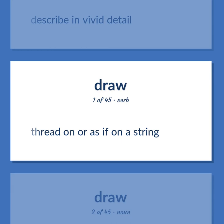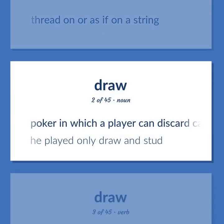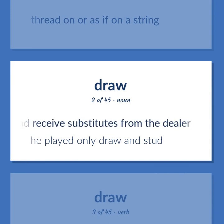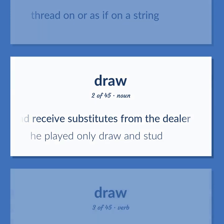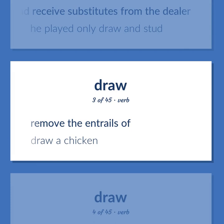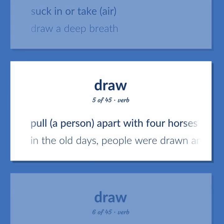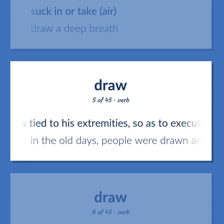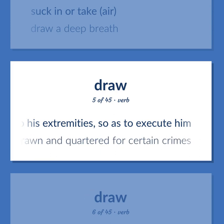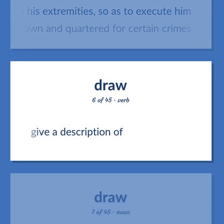Draw: Thread on or as if on a string. Poker in which a player can discard cards and receive substitutes from the dealer. He played only draw and stud. Remove the entrails of. Draw a chicken. Suck in or take air. Draw a deep breath. Pull a person apart with four horses tied to his extremities so as to execute him. In the old days, people were drawn and quartered for certain crimes. Give a description of.